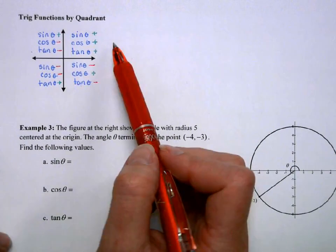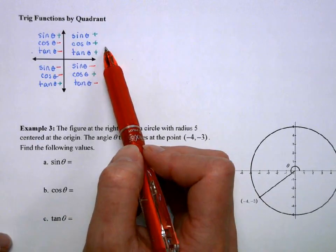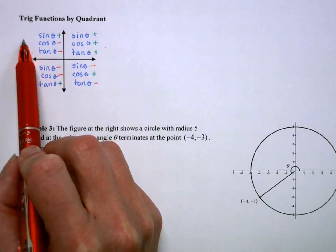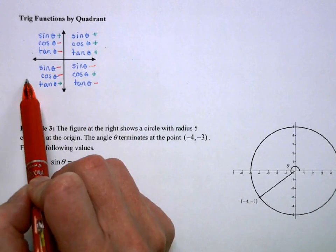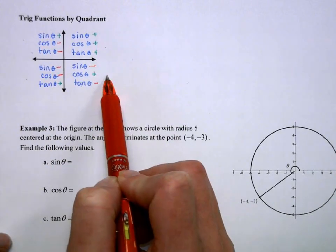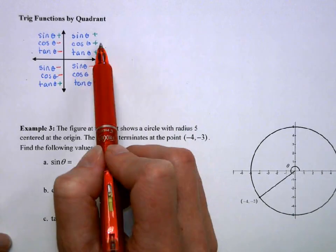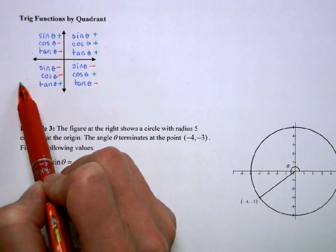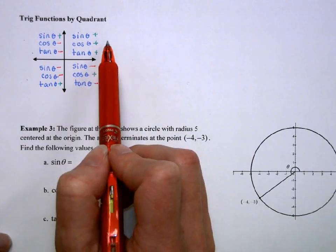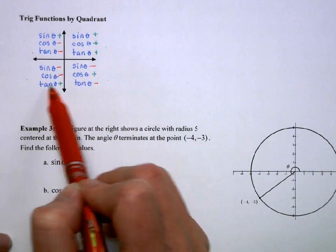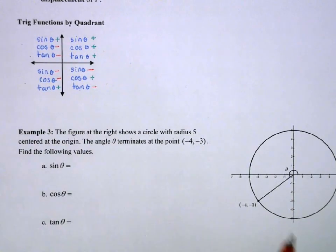So, in each quadrant, first quadrant, everything is positive. Second quadrant, sine is positive. Third, tangent is positive. Fourth, cosine is positive. So, a mnemonic I like to use is, All students take calculus. A, S, T, C for what's positive. Or just using our understanding of positive and negatives.